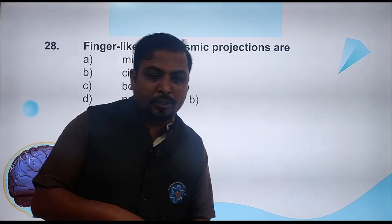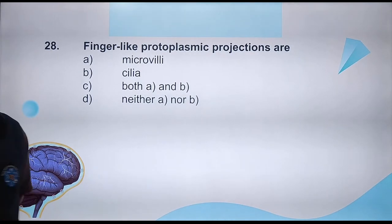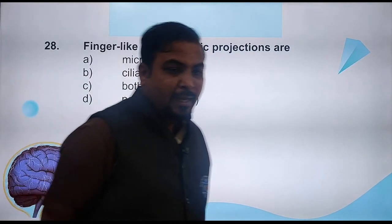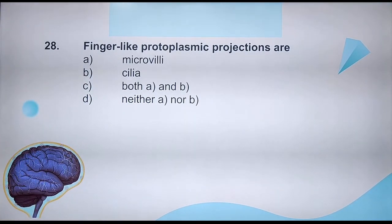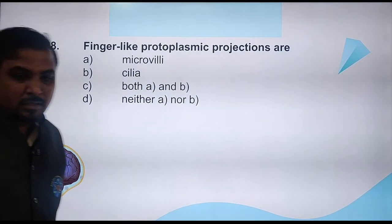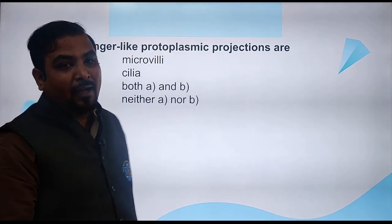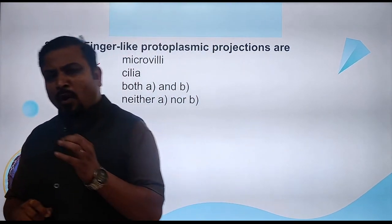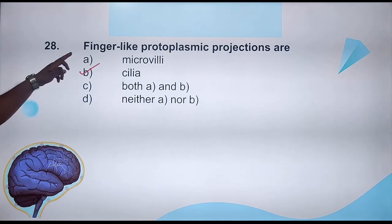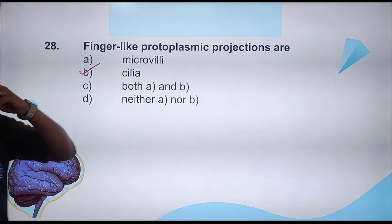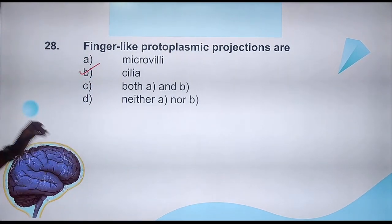This question is quite simple. The finger-like projections at the apical end — what are they called? Remember well: these projections are actually known as cilia. Microvilli are much smaller — you cannot call them finger-like projections. So finger-like protoplasmic projections are actually cilia. The right answer for question 28 is option B.